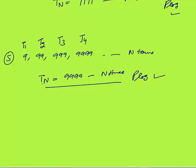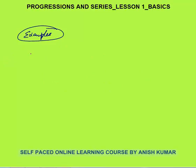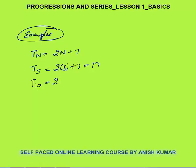So in this way I have explained the difference between a sequence and a progression. Let's discuss a few examples. If the nth term of any progression is given to you as 2n + 7, you can always calculate any term you want. If you want to calculate the 5th term, it will be 2×5 + 7 = 17. You can also calculate the 10th term: 2×10 + 7 = 27.